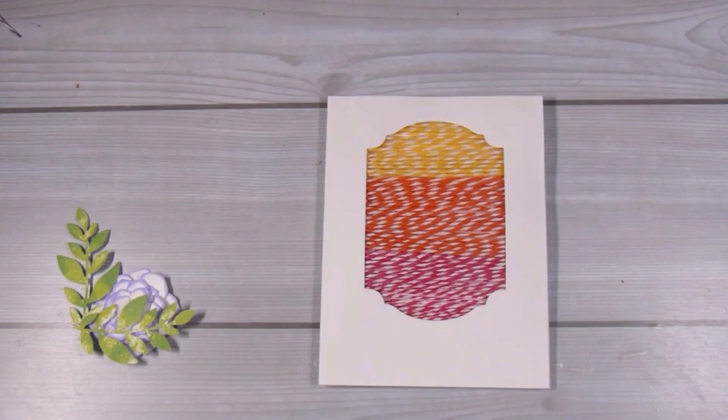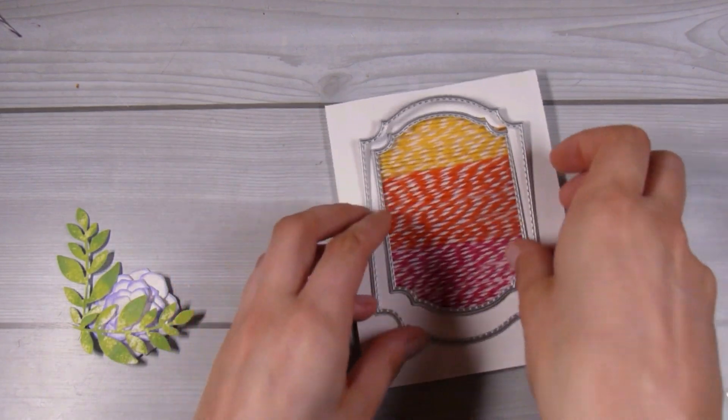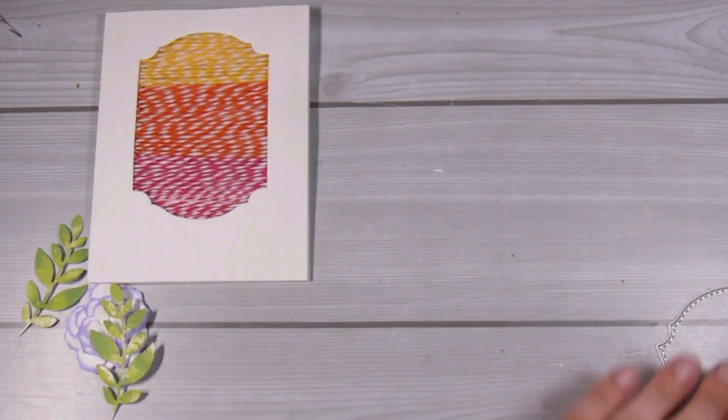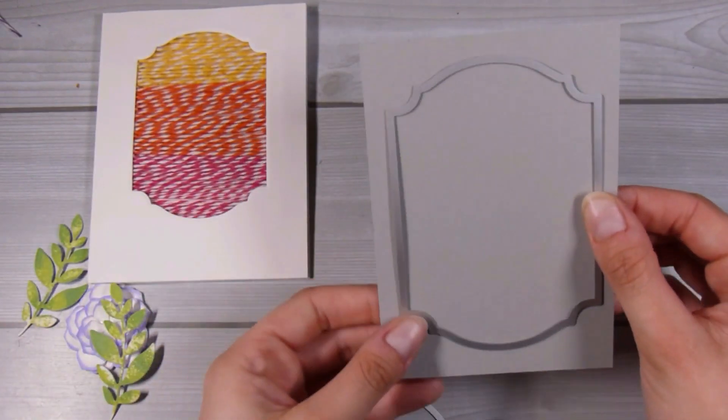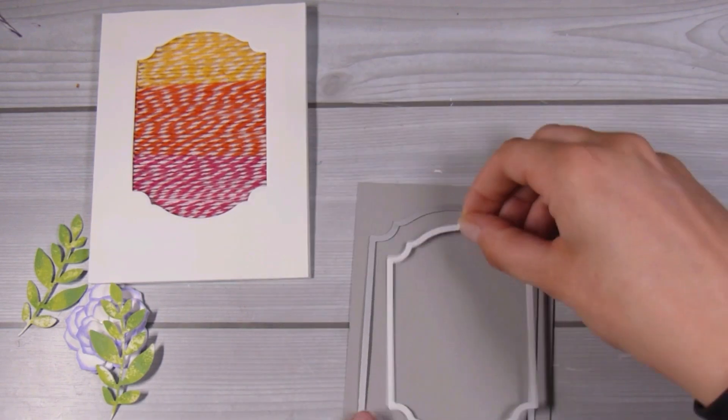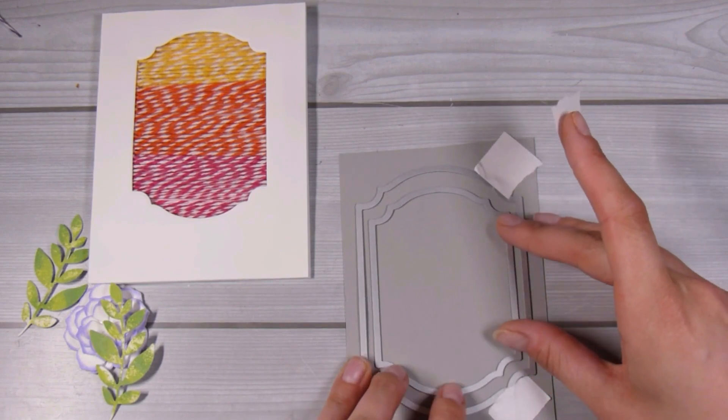I'm actually going to take the same size die that I used before and the one larger in the same set, and I'm going to cut it out of some gray cardstock. I think this is Simon Says Stamp smoke colored cardstock and this will create a frame that I'll put around it.